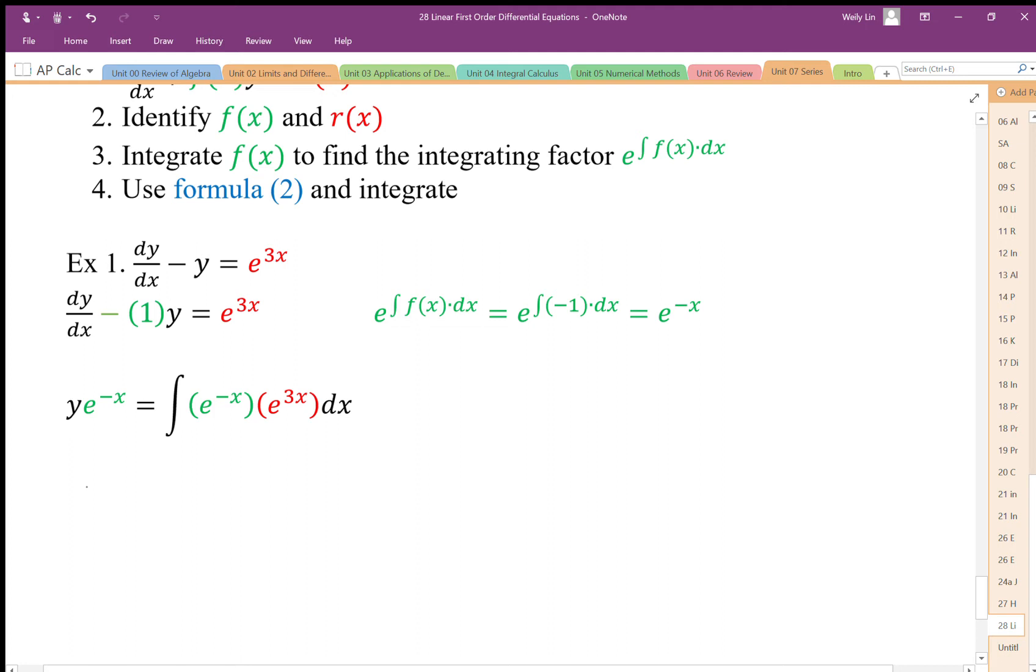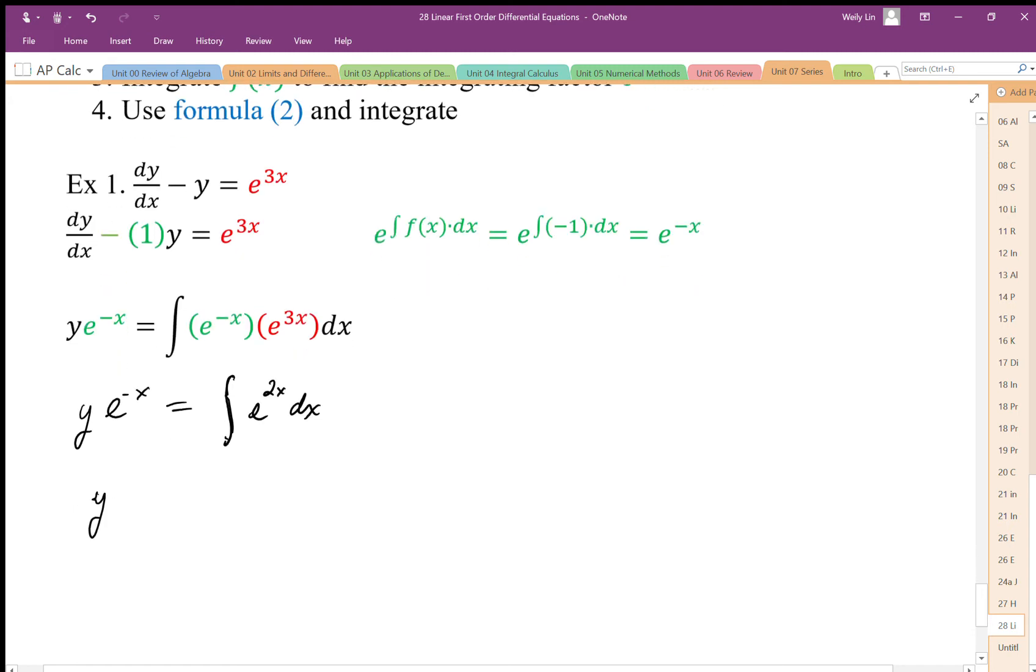So we're going to end up with y times e to the negative x is equal to the integral of e to the 2x dx. Integrating that, we end up with y. Now I'm going to move that e to the x to the other side. That becomes e to the x, and the integral of this is going to be e to the 2x over 2 plus c.